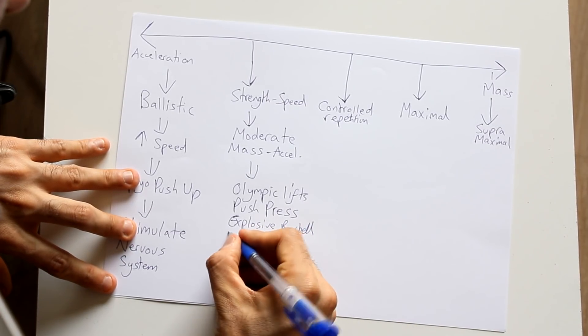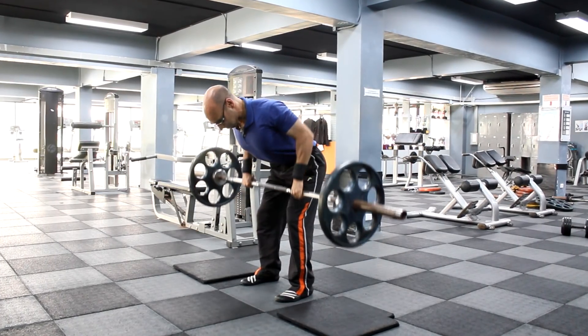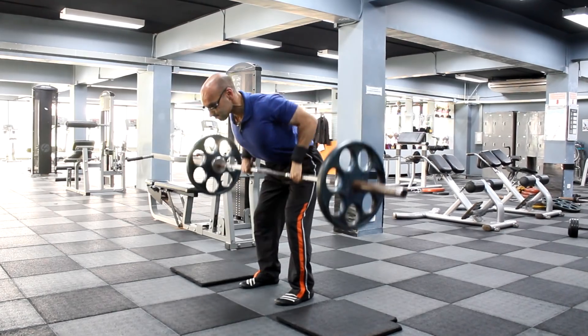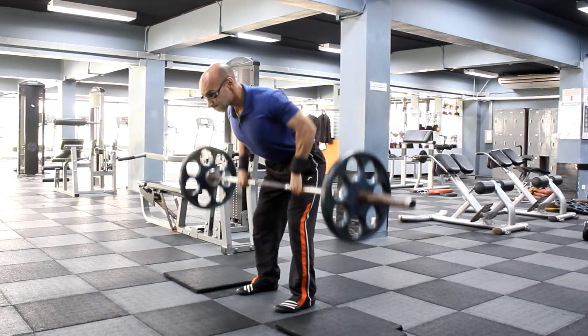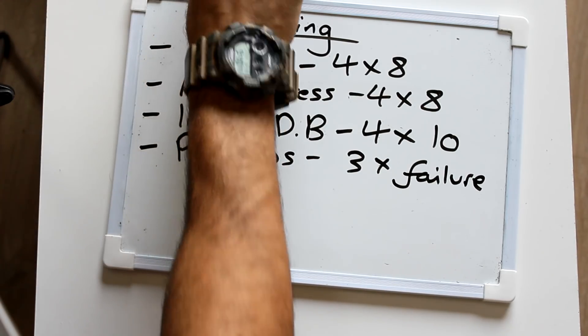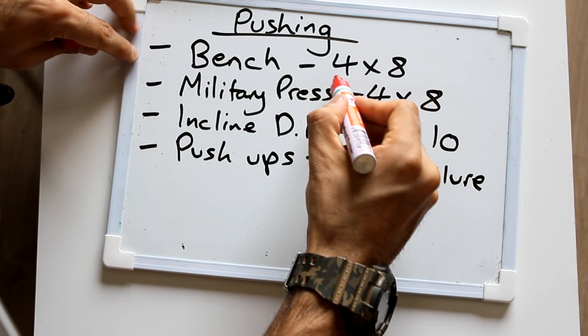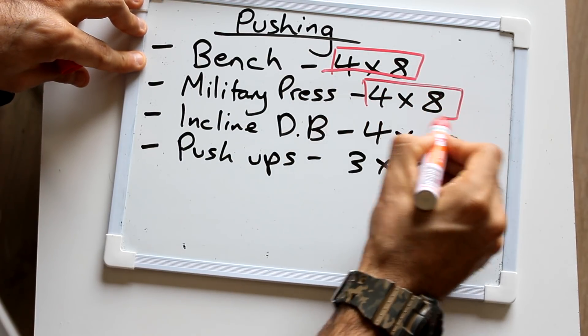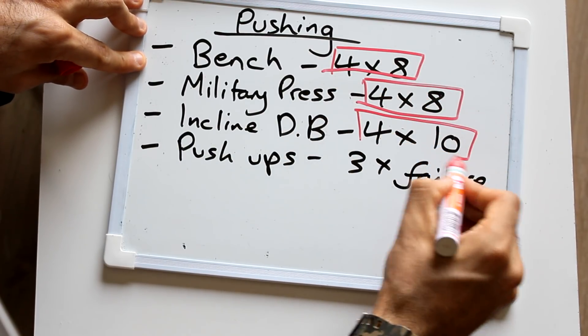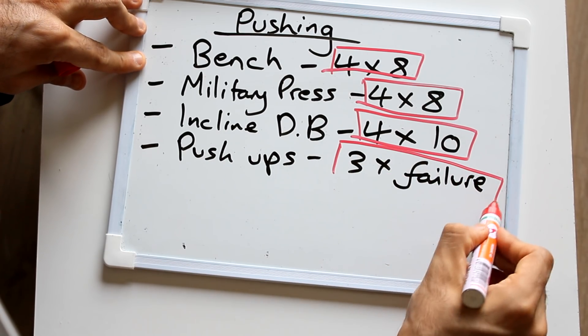Just beyond the middle we have the controlled rep category, which is most likely what you are doing — bodybuilding-style bench pressing, dumbbell shoulder press. These types of exercises may be dominant within your workout program. Most muscle-building programs have a large amount of controlled repetition exercises where you are using a fairly heavier mass than acceleration, your 8-rep bench press for example.